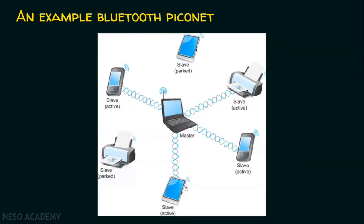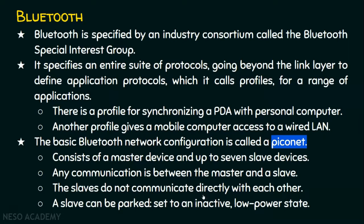Suppose this PDA device wants to communicate with this mobile phone — though both are active slave devices, they cannot communicate with each other directly; they have to communicate through the master device only. A slave can be parked — set to an inactive low power state. Since Bluetooth devices typically run on batteries, putting a device into a low power state when it is not active helps save battery power, and that is why we have certain states in the Bluetooth configuration.